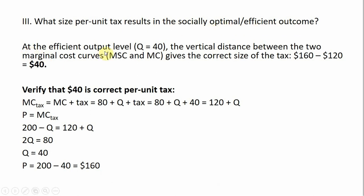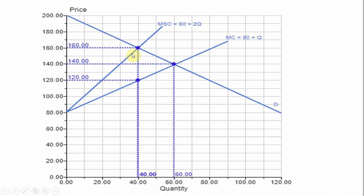At the efficient output level Q equals 40, the vertical distance between the two marginal cost curves, the marginal social cost and the private marginal cost, gives the correct size of the tax of $40. Looking back at this slide, this vertical distance, 160 minus 120, means that if we institute a $40 tax in this market, we would get to this efficient solution of a price of 160 and a quantity of 40.